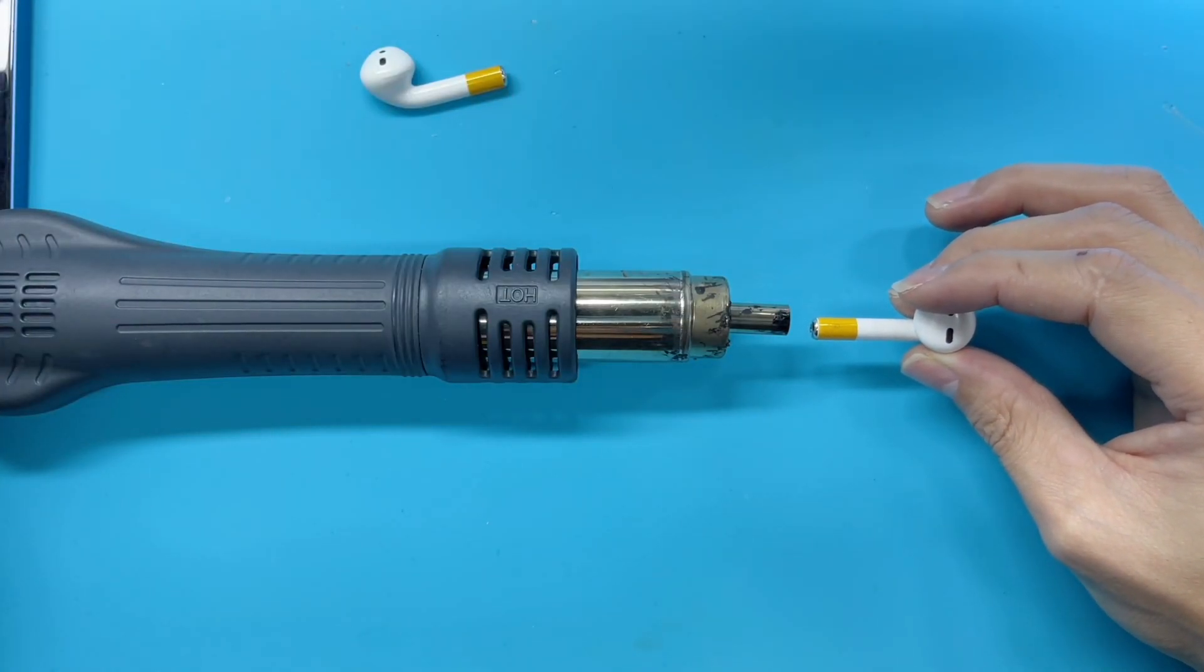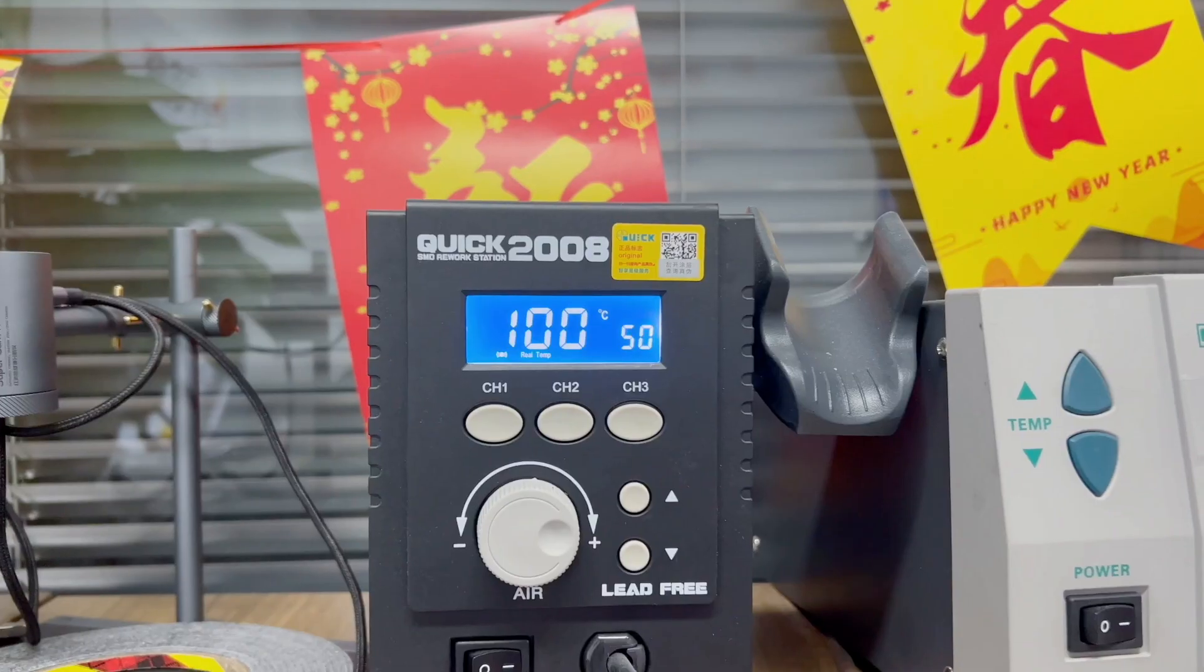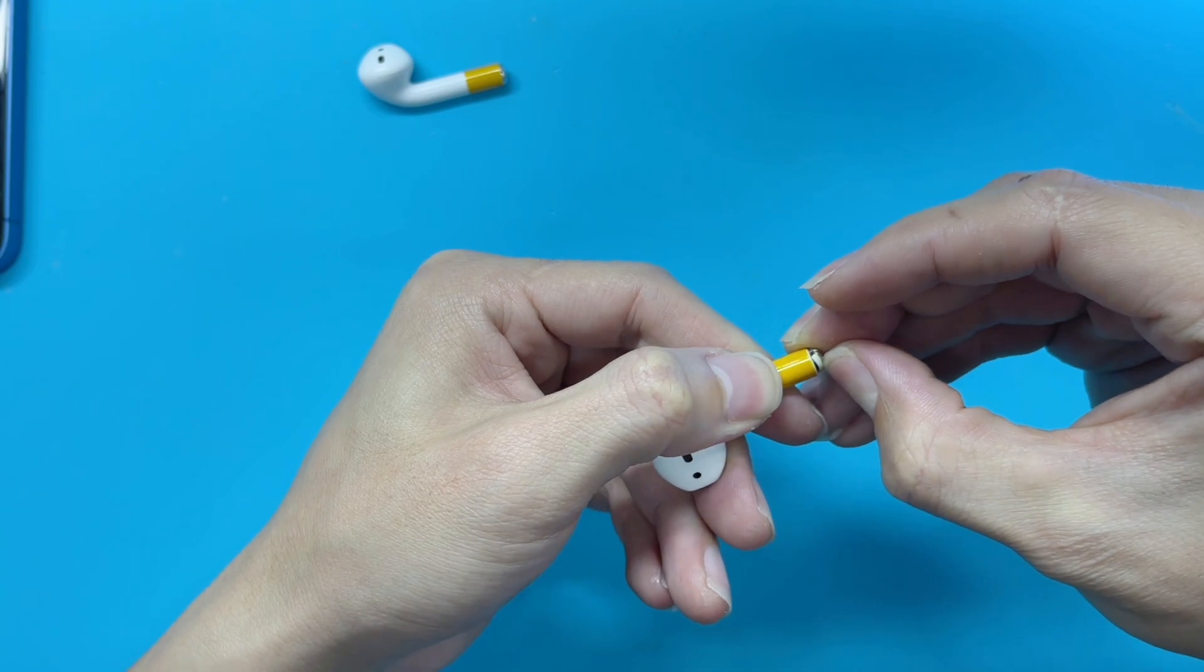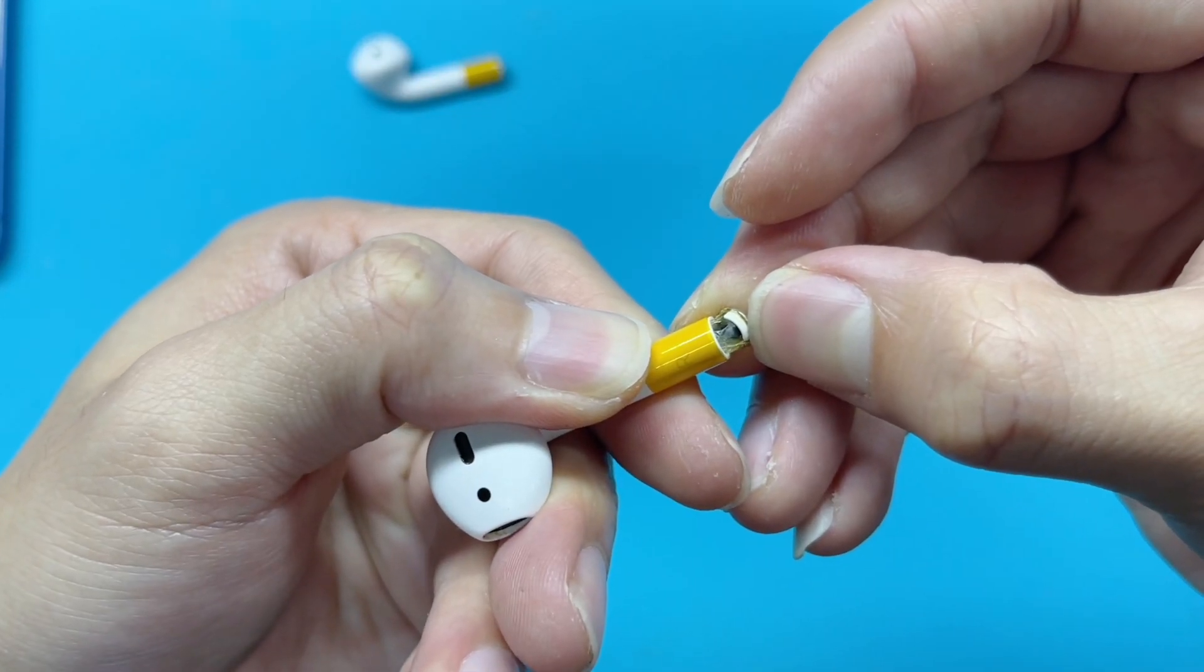Use the heat gun to heat the bottom cover of the AirPods. 100 degrees Celsius, heating for 8 seconds. After heating, let's carefully open the bottom cover.